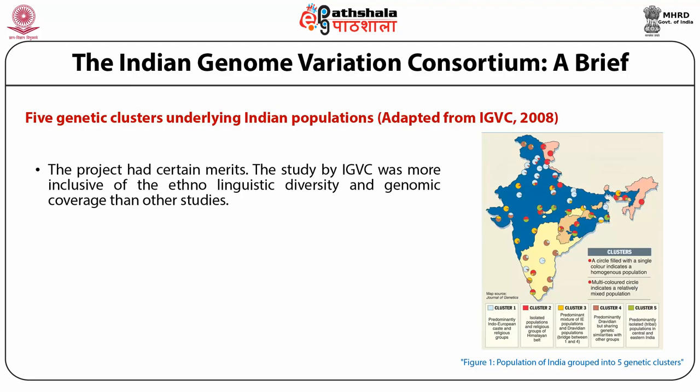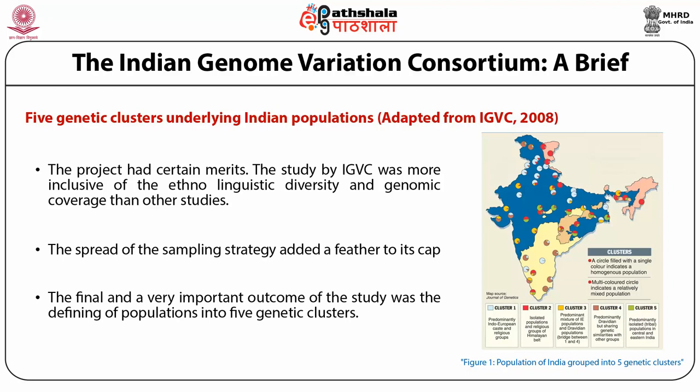Here in the slide you can see 5 genetic clusters underlying the Indian population on an India map. The IGVC study was more inclusive of ethno-linguistic diversity and genomic coverage than other studies, and the broad sampling strategy added further merit. The final and very important outcome was the defining of the Indian population into 5 genetic clusters.